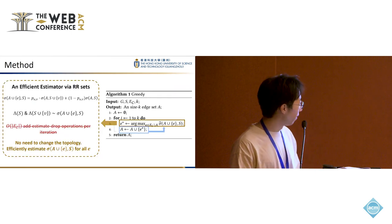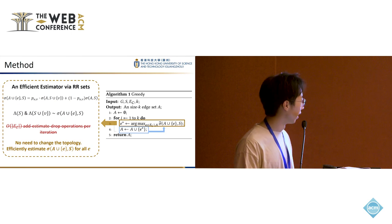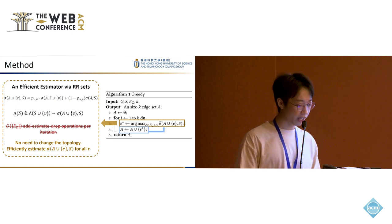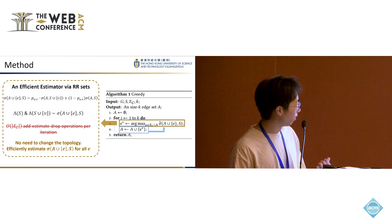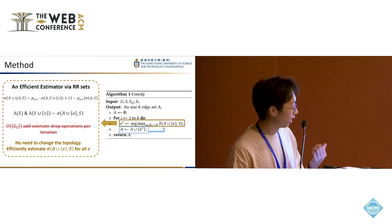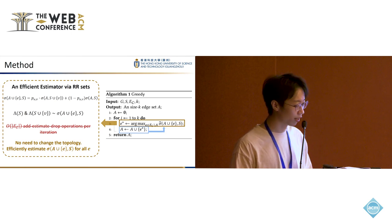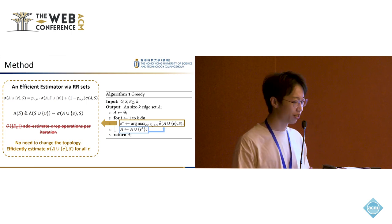Here comes our method. First, we provide a lemma stating that when you estimate the influence of a new coming edge e pointing from u to v, we can compute it based on the current topology by combining the influence of S union v and influence of S in the current topology.